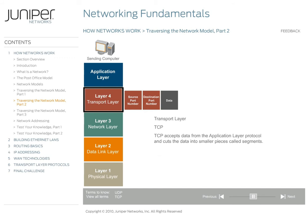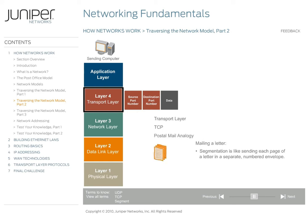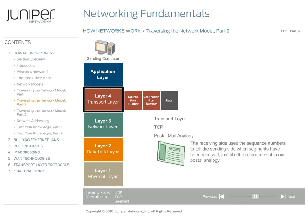TCP accepts data from the application layer protocol and cuts the data into smaller pieces called segments to ensure a steady flow of data between two computers, regardless of the differences in connection bandwidth. Segmentation is like taking our letter and sending each page in a separate envelope. By numbering the pages, the recipient can place the pages back in order. Likewise, TCP assigns a sequence number to each segment. On the receiving side, TCP uses the sequence numbers to put the segments back together in the correct order. The receiving side uses the sequence numbers to tell the sending side when segments have been received — just like the return receipt in our postal analogy. If the sending side does not receive an acknowledgement within a reasonable amount of time, it resends the segments.